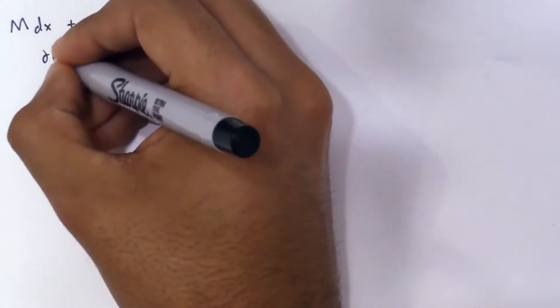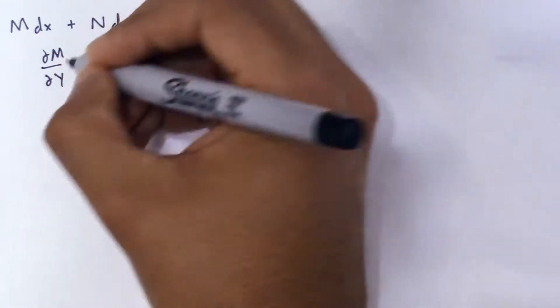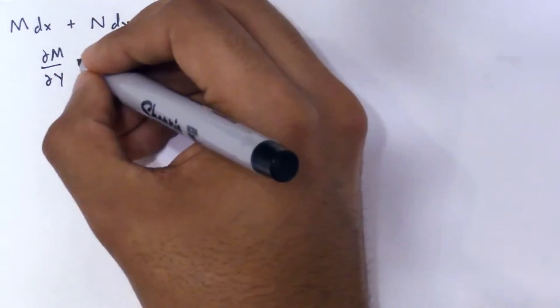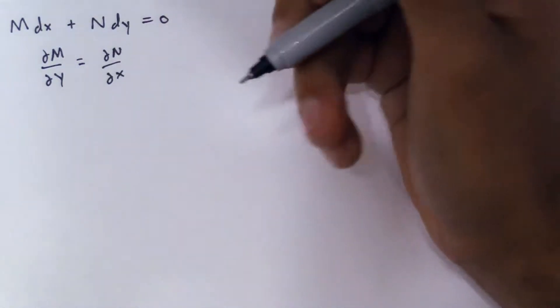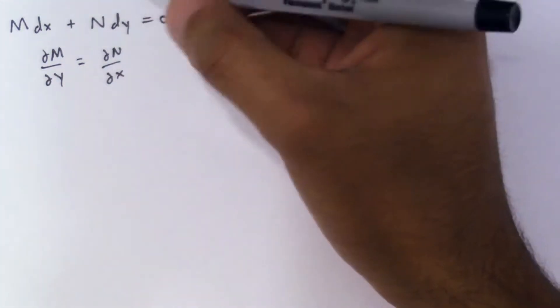Today I'm going to show you how to solve an exact differential equation that needs an integrating factor or parameter for it to be exact. A traditional exact equation takes the form where the partial of M with respect to y and the partial of N with respect to x should be equal. However, in this special case, they are not equal.